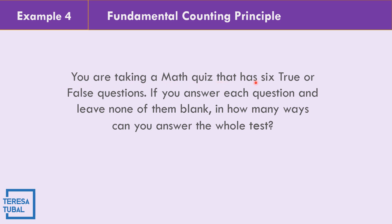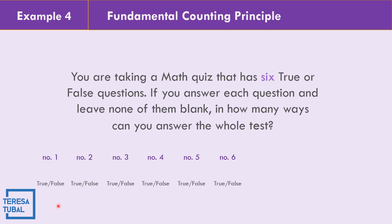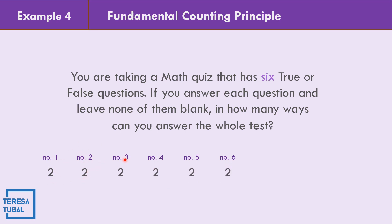For number four, you are taking a math quiz with six true-or-false questions. If you answer each question and leave none blank, in how many ways can you answer the whole test? Each question has two decisions — true or false. So we multiply 2 × 2 × 2 × 2 × 2 × 2 = 64 different ways to answer the test, since 2 × 2 = 4, × 2 = 8, × 2 = 16, × 2 = 32, × 2 = 64.